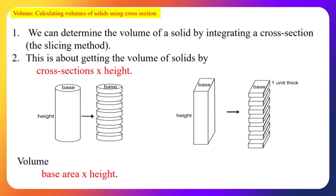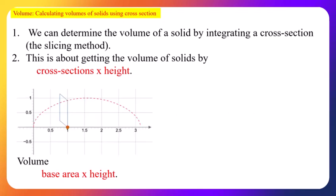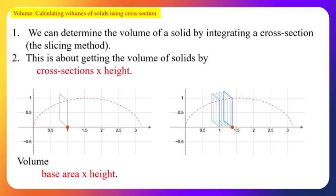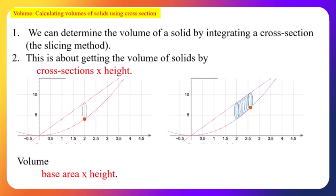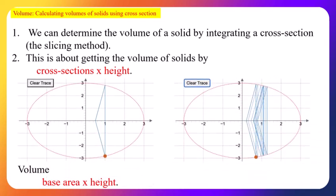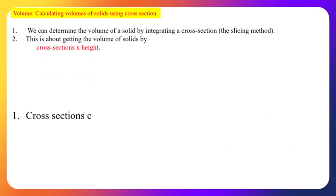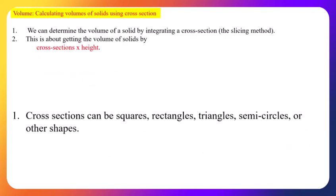Basically, volume equals base area times height — a concept we are already familiar with. When using integration, we apply this same idea: base area times height. The cross-sections can be rectangles, squares, circles, triangles, semi-circles, or any other shapes.